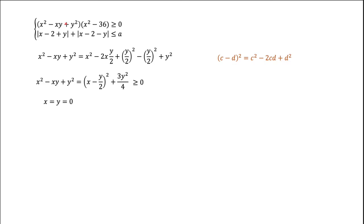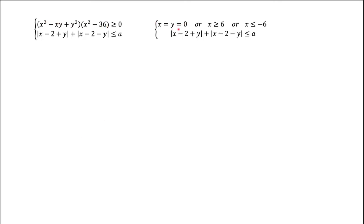If we divide both parts of this inequality by the same positive number, the inequality will hold. In this case we get X squared minus 36 greater than or equal to zero. Rearranging, we get X squared greater than or equal to 36, which means X is either greater than or equal to 6, or less than or equal to minus 6. So essentially we've got three possibilities for the first inequality: either X and Y equal zero, or X is greater than or equal to 6, or X is less than or equal to minus 6.